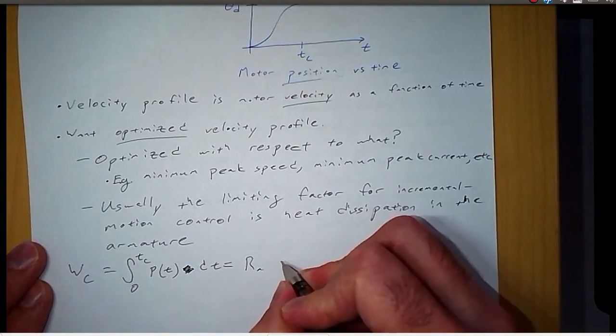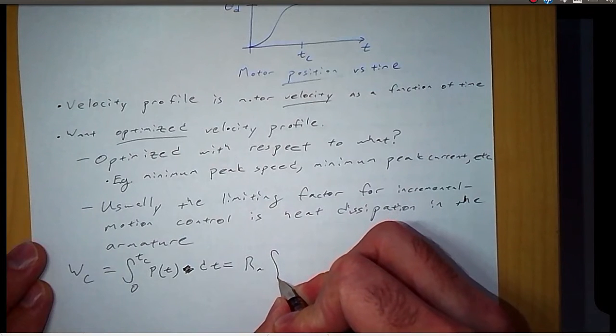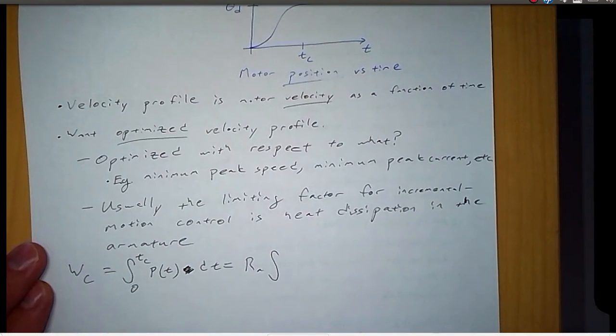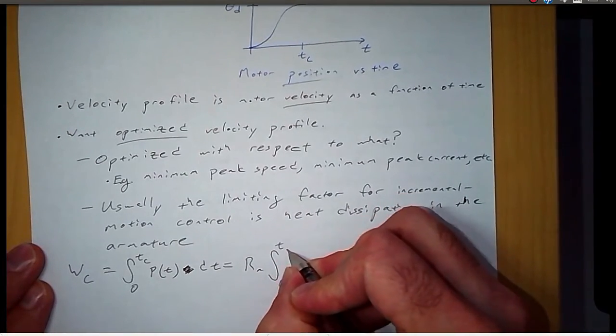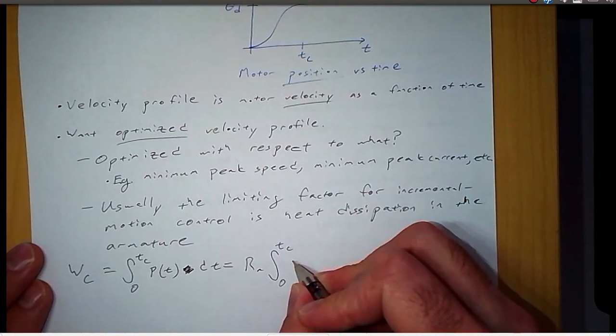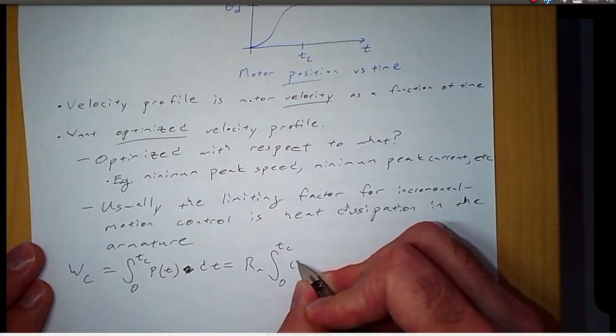And if we substitute in power equals vi, or i squared r, then the heat dissipated is armature resistance times current squared.